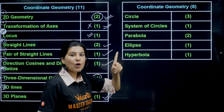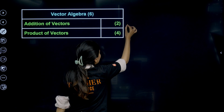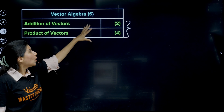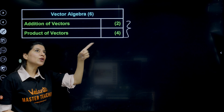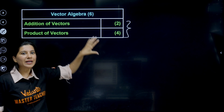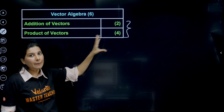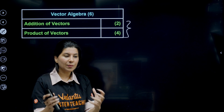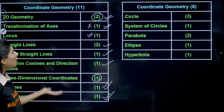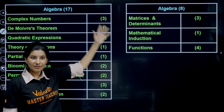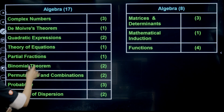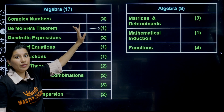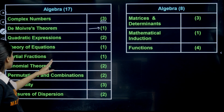Vector algebra is something everyone should focus on. From product of vectors you get four questions, and from addition of vectors two questions — that's six marks from just two topics. Although superficially algebra carries 25 marks and calculus 20, vectors effectively have high weightage because the syllabus is small but the question count is high. In algebra, complex numbers carry three marks, De Moivre's theorem one mark, quadratic two marks, theory of equations two marks, and partial fractions one mark.